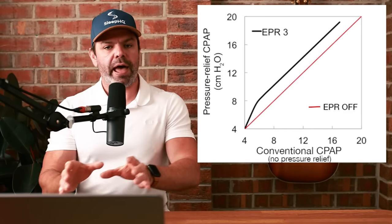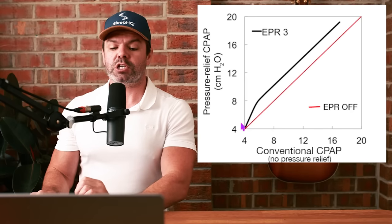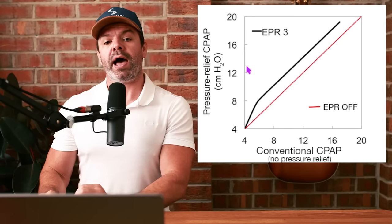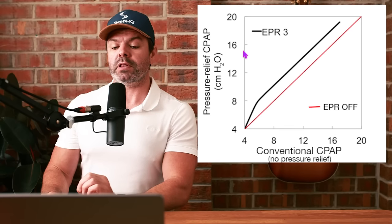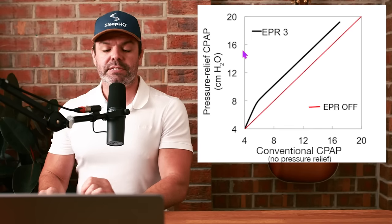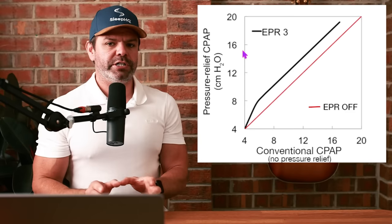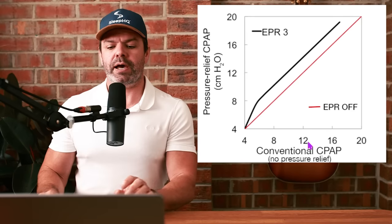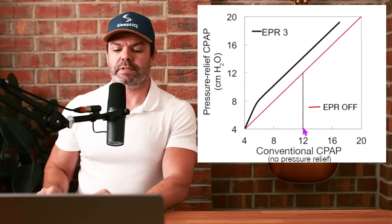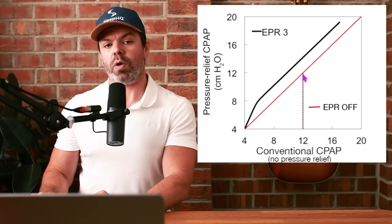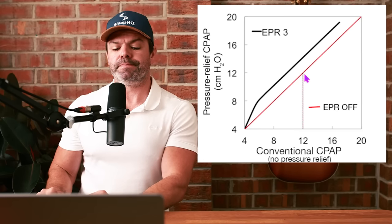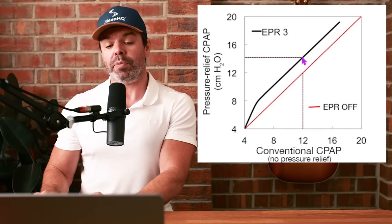Let me break it down for you. This chart shows the pressure required for apnea control with and without EPR. Along the x-axis is conventional CPAP with no EPR, and along the y-axis is EPR on level 3. Let's say the prescribed pressure for you is 12 centimeters with no EPR.